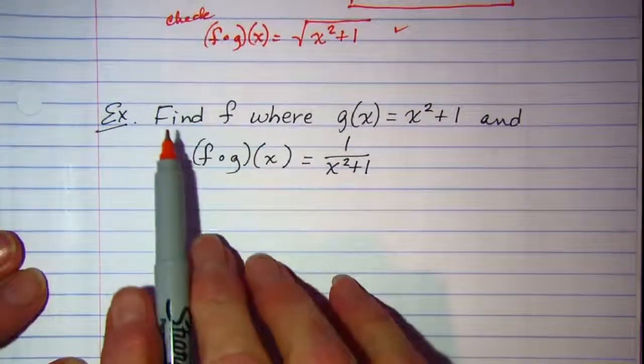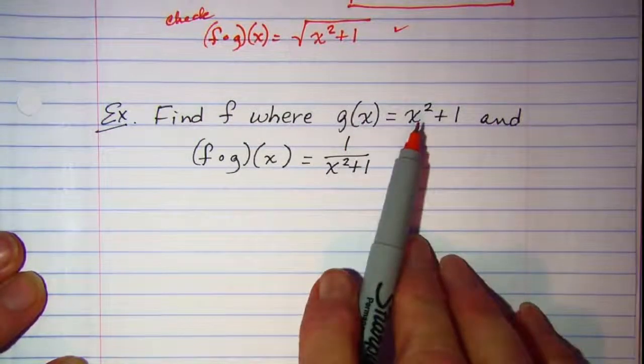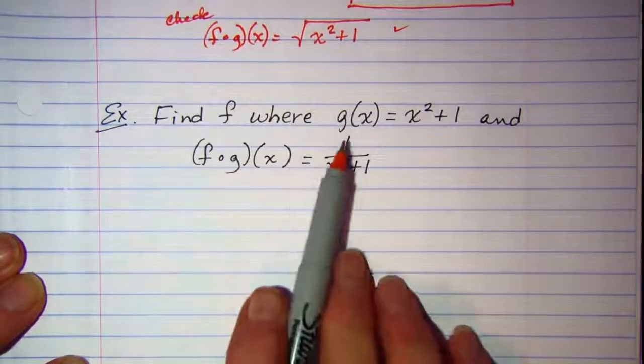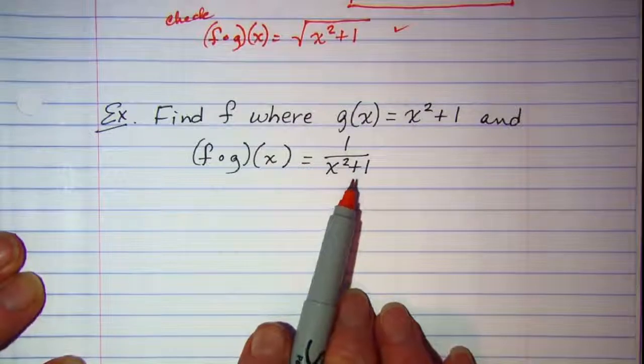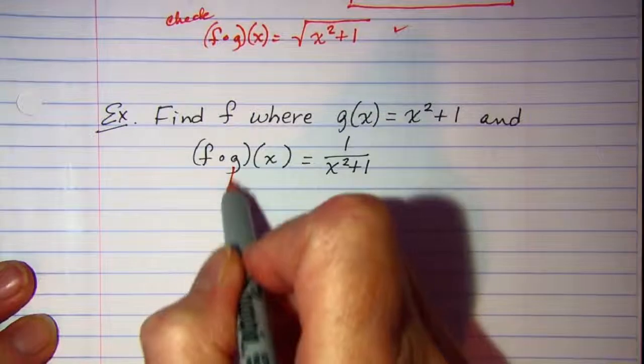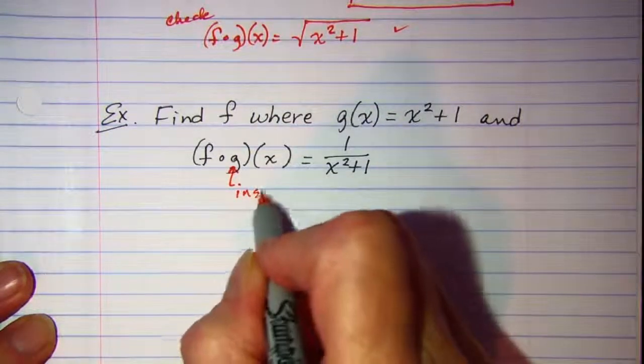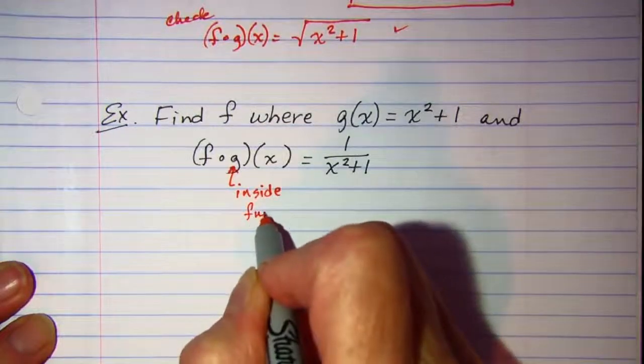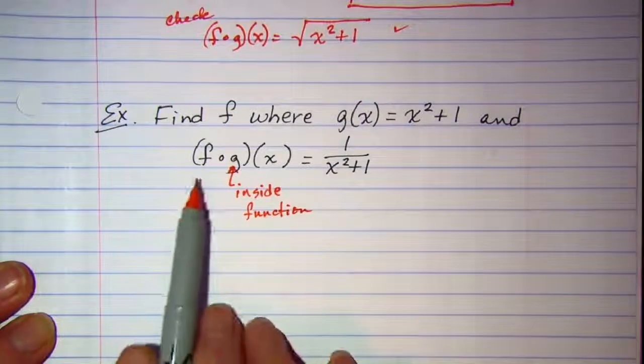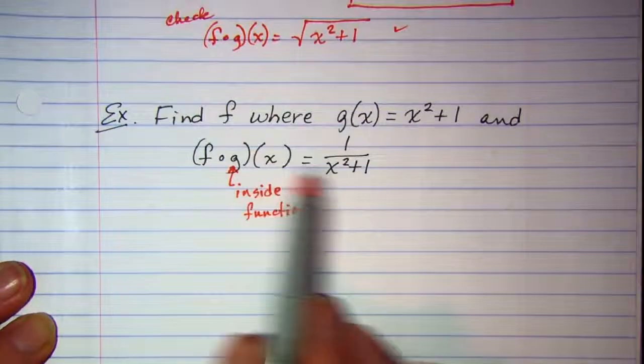In this example we're asked to find f where g of x is x squared plus 1 and f composition g of x is 1 divided by x squared plus 1. So again, my inside function is the g and my f is my outside function.